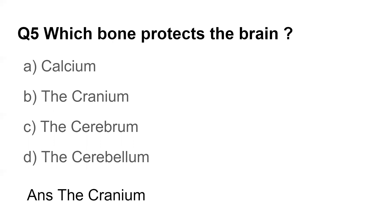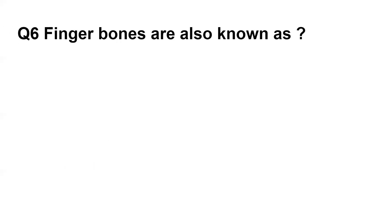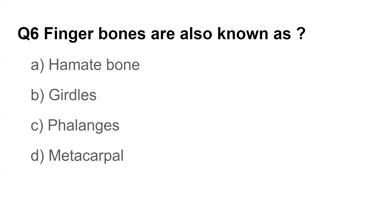Question number six: Which of the following protects the brain? Options are hamate bone, girdle bone, phalanges, and metacarpal. The answer is phalanges.